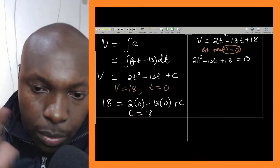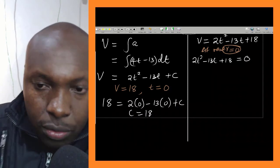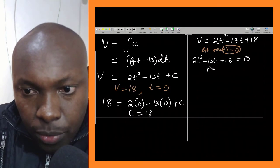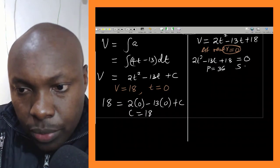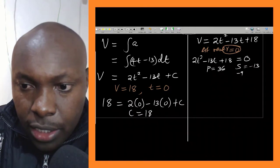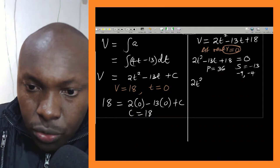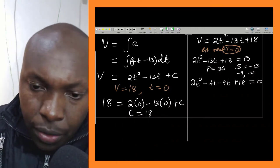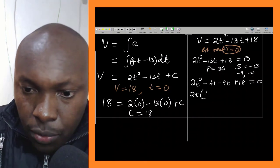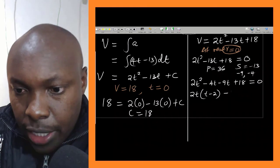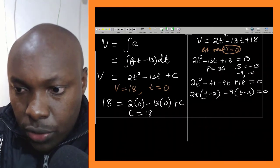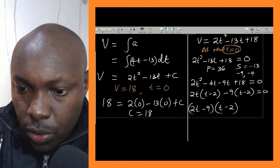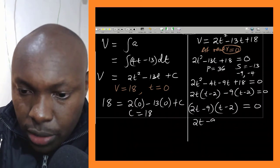This is a quadratic equation. I will solve it using factorization, finding two numbers whose product is 2 × 18 = 36 and whose sum is negative 13. Those two numbers are negative 9 and negative 4. Factorizing: 2t² minus 9t minus 4t plus 18 = 0, giving (2t minus 9)(t minus 2) = 0.